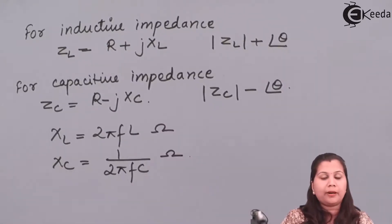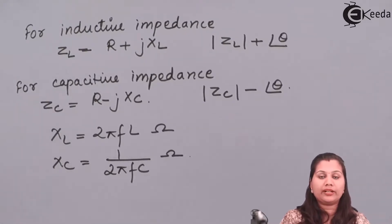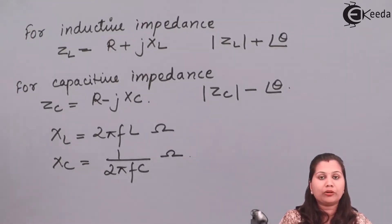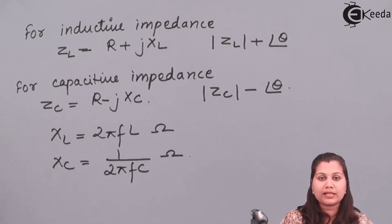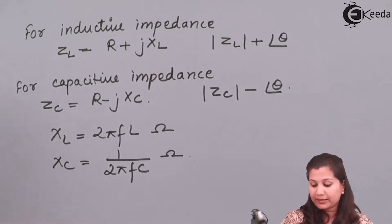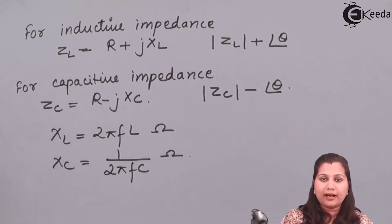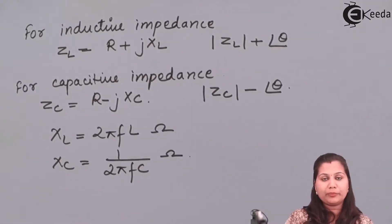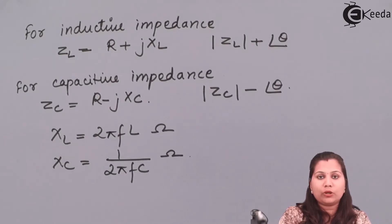So here we studied about the alternating current bridges, how we can derive the balance equation for the alternating current bridges. The famous equation we derived is Z1·Z4 = Z2·Z3 — the product of the impedances of the opposite arms is equal. We also got the relationships when impedances are expressed in polar form and in the resistive form as a combination of inductance and capacitance, considering both polar and coordinate forms of representation. I hope that this topic — the general balance equation for alternating current bridges — is clear to you. Thank you.